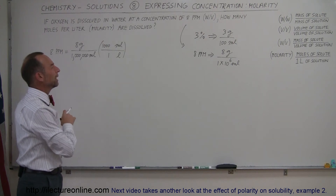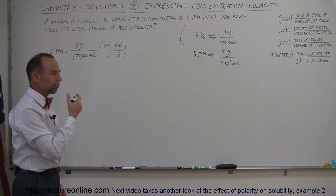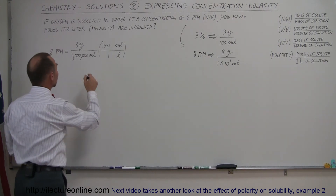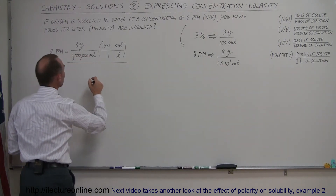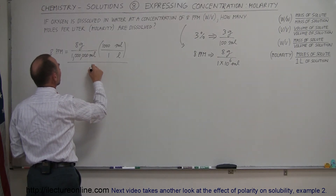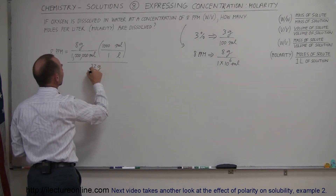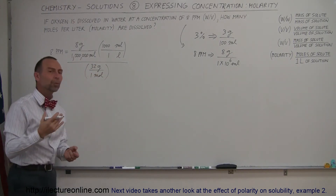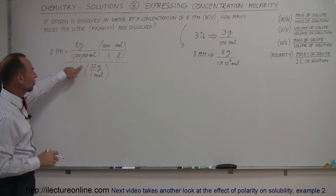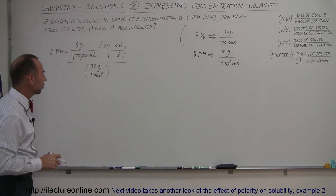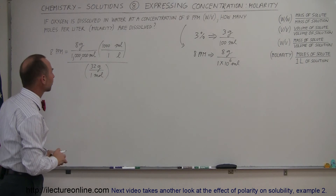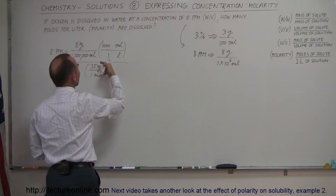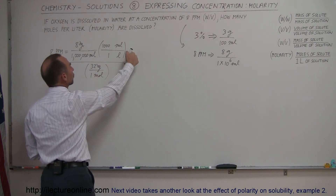We still need moles of solute in the numerator, so we have to convert grams to moles for oxygen. We divide by the molar mass: 32 grams per 1 mole. Remember, oxygen is a diatomic molecule — each oxygen atom is 16 grams per mole, so two atoms per molecule gives 32 grams per mole. This causes grams to cancel out, and moles move to the numerator. Dividing by grams-per-mole sends moles to the top.